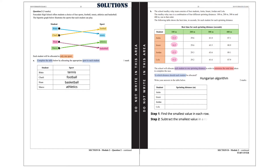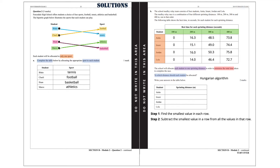Step 2: subtract the smallest value in a row from all the values in that row. And now we have the new values in the table. Step 3: find the smallest value in each column. That is 0 in column 1, 14 in column 2, 46.4 in column 3, and 72.7 in column 4.